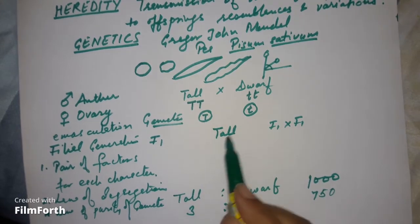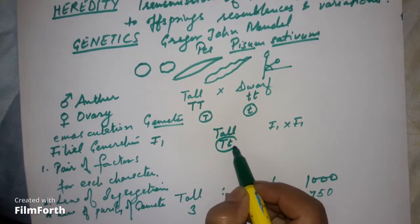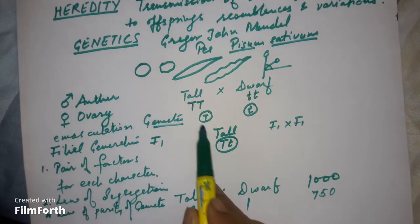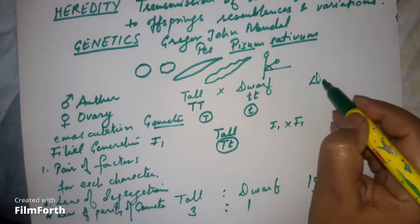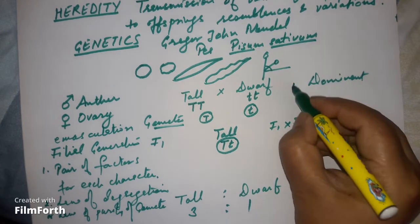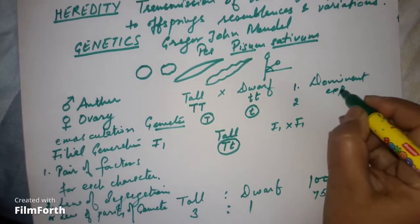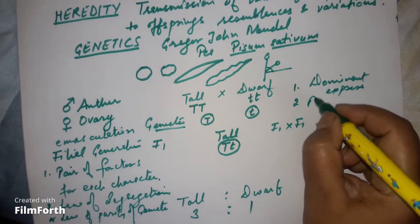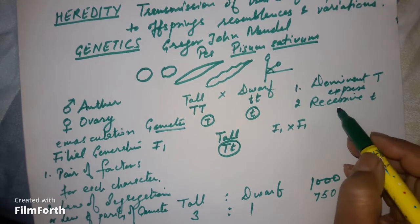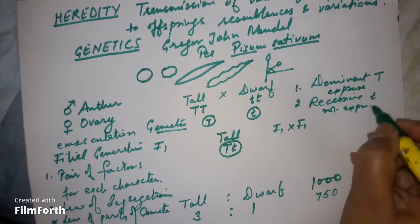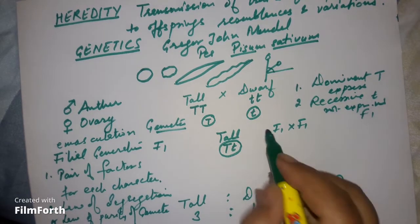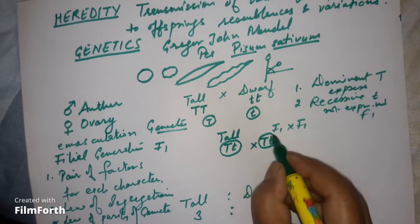After fertilization, in the F1 generation all plants appeared tall. This is because one factor is dominant — able to express itself — while the other is recessive and cannot express. Capital T is dominant for tallness and small t is recessive. In F2, when F1 plants were crossed with each other, both tall and dwarf appeared.